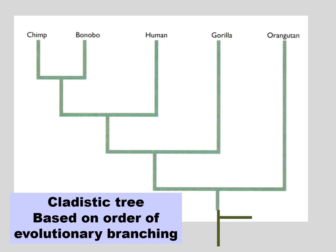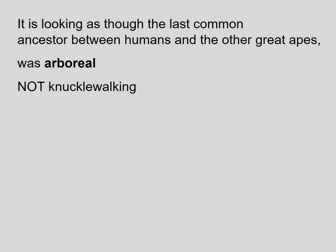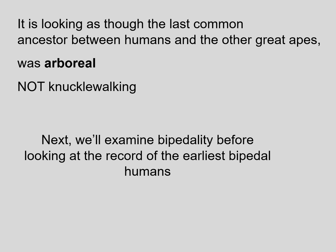One way to display the origin of the human lineage is to show a cladistic tree, based on the order of evolutionary branching. Among the apes, the first to branch off are the lesser apes, at some point between 20 and 13 million years ago. The orangutan has also branched off by 13 million years ago, the gorilla by about 10 million years ago, and the humans versus the chimp-bonobo lineages split sometime around 6 to 5 million years ago. Most recently of all, bonobos split from chimps less than 1 million years ago. It's looking as though the last common ancestor between humans and the other great apes was arboreal, not knuckle-walking, as we had long assumed.